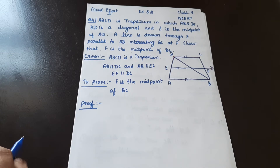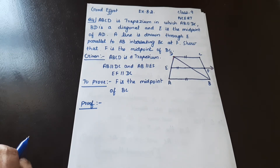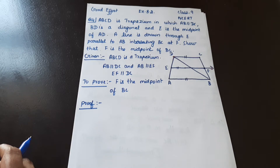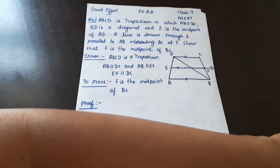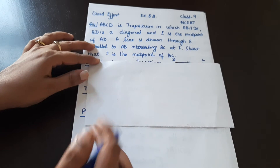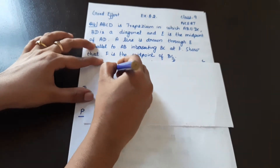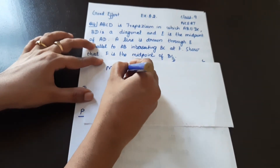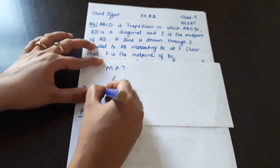So we are going to use the midpoint theorem. There are two theorems: theorem 8.9 is the midpoint theorem, and theorem 8.10 is the converse of the midpoint theorem. Let's first look at the midpoint theorem.